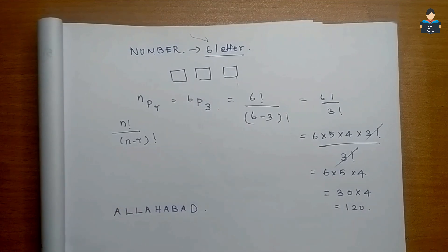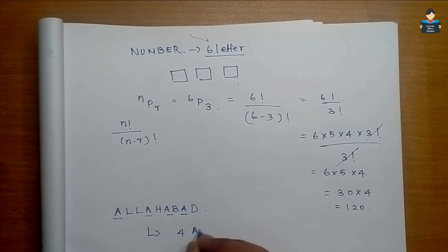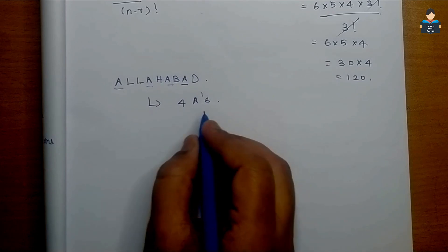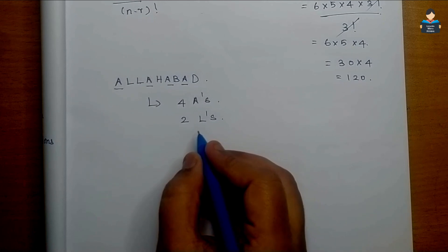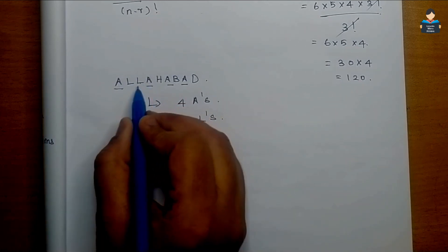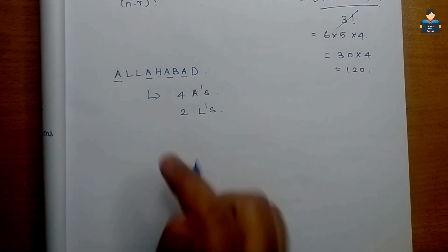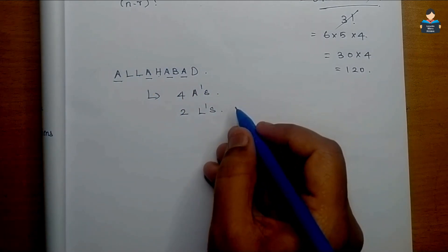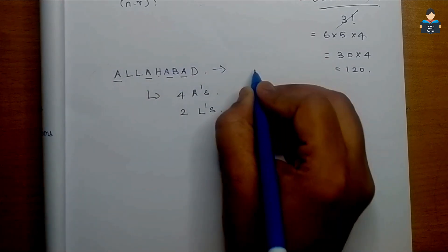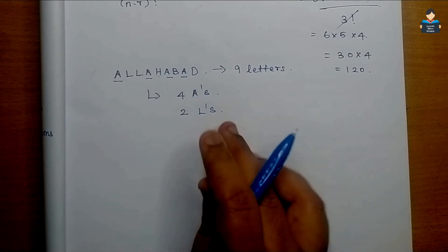Take the word Allahabad. We can see there are four A's and two L's that are repeated, along with H, B, and D. In terms of permutation, we can see there are 9 letters in total, where four A's and two L's are repeated.